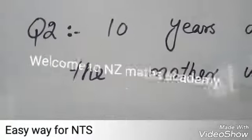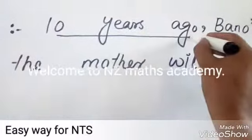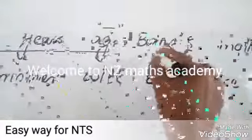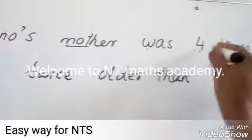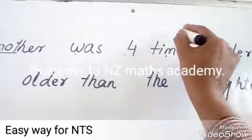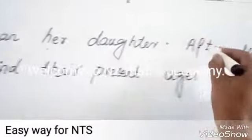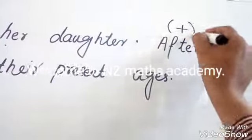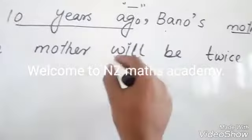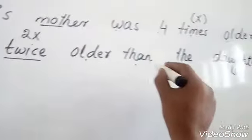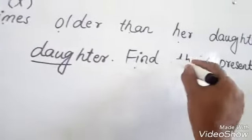Second question on age. 10 years ago, Banu's mother was four times older than her daughter. After 10 years, the mother will be twice older than the daughter. Find their present age.